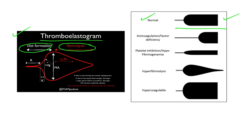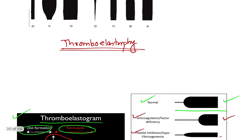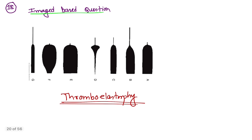If there is anticoagulation deficiency, the graph will appear in one pattern. If there is platelet inhibition, the graph looks different. There is also a graph for hyperfibrinolysis and one for hypercoagulability. Thromboelastography is one of the best investigations to assess the status of coagulation abnormality in the body.